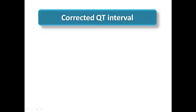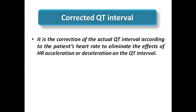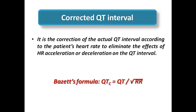Regarding the corrected QT interval: the actual QT interval starts from the beginning of the QRS complex to the end of the T-wave. The QT interval is dynamic and affected by heart rate — a slower heart rate gives a longer QT interval and vice versa — so we need to correct QT to heart rate. The most common formula is Bazett's formula: corrected QT equals QT divided by the square root of the RR interval, where RR is in seconds and QT is in milliseconds.